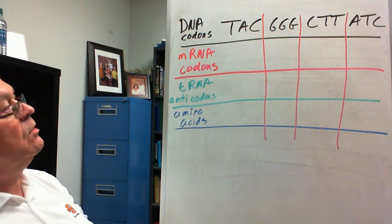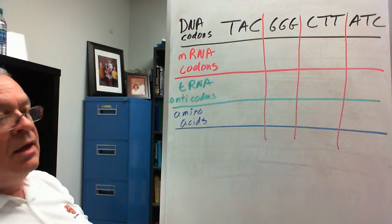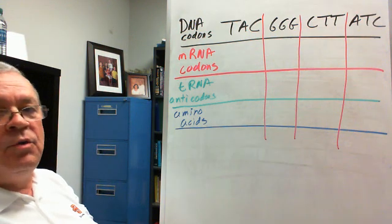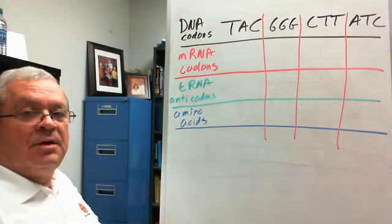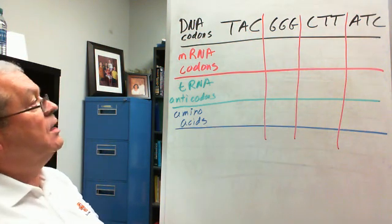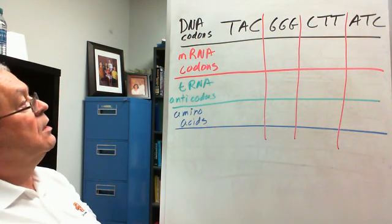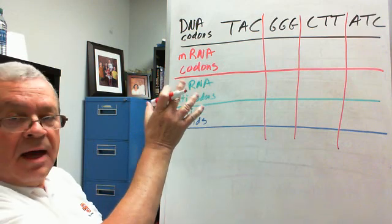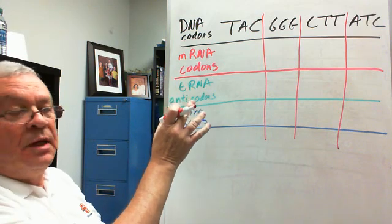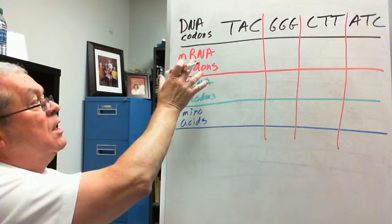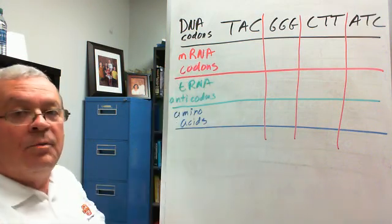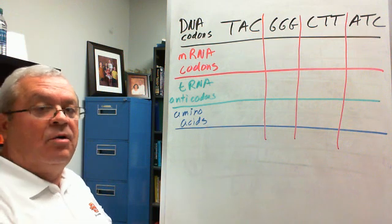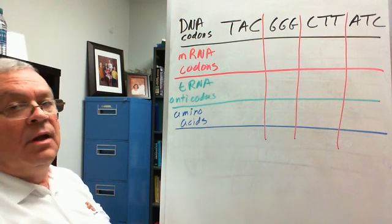What's the first thing we do to solve a genetic code problem? We first do what transcription does, and that is make copies of the DNA codons in the form of messenger RNA codons.